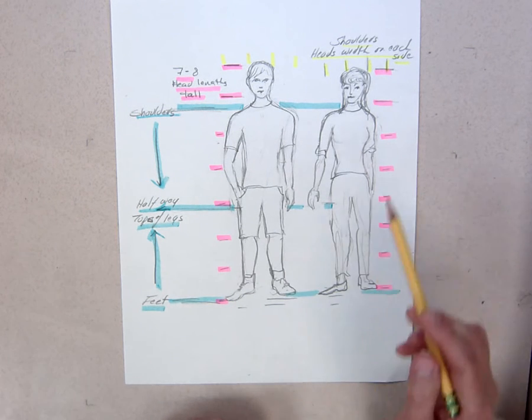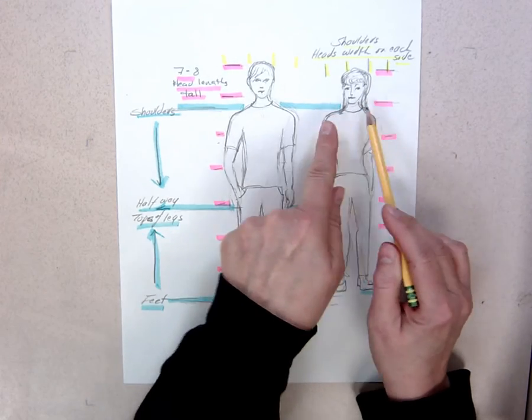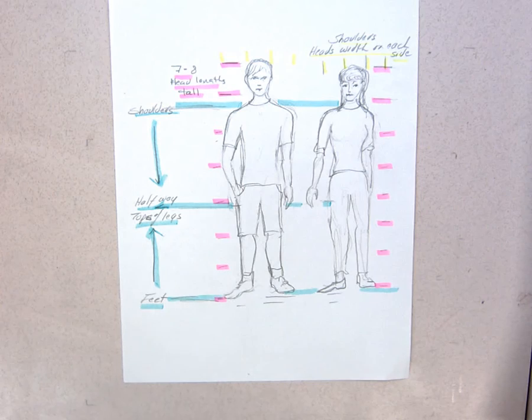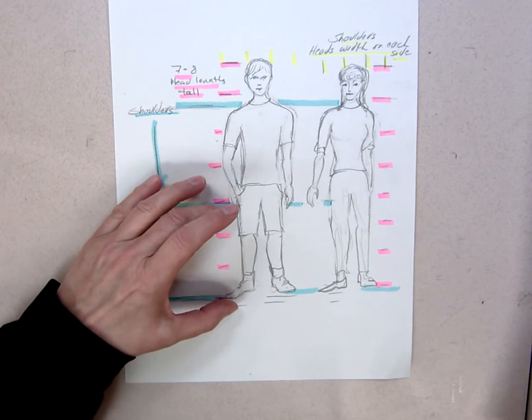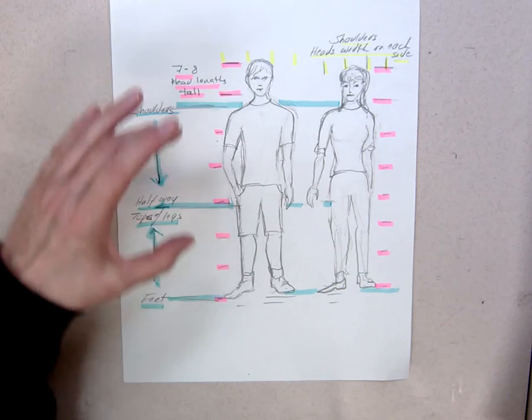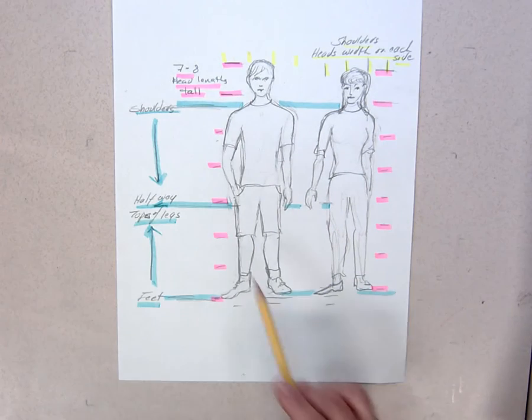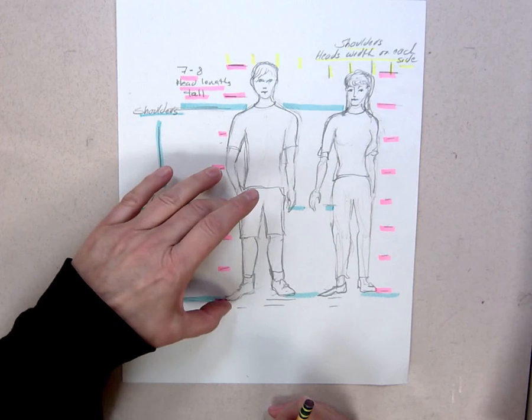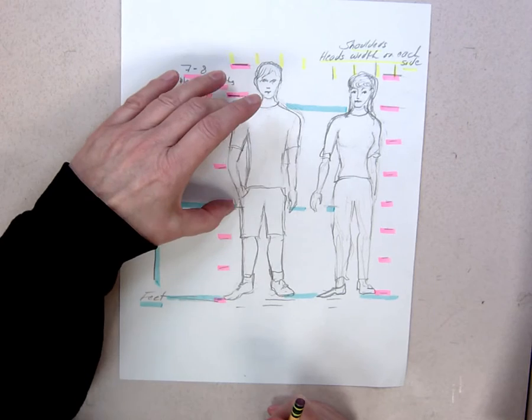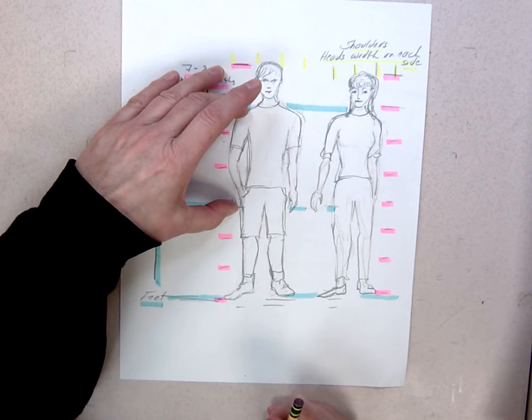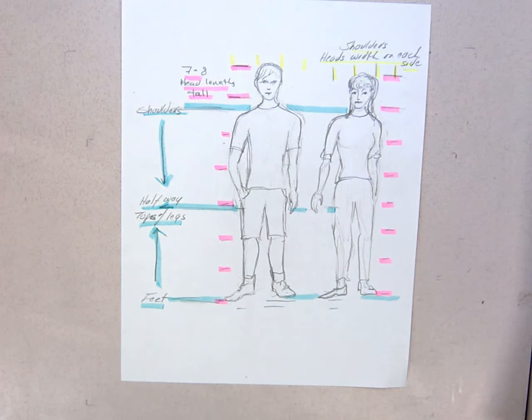Other things: shoulders. They are a head width wide on either side. The human body is about half legs, half upper body. From the toe to the top of the thigh should equal from that same point up to the shoulder. I will leave a photograph of this up for you to see.